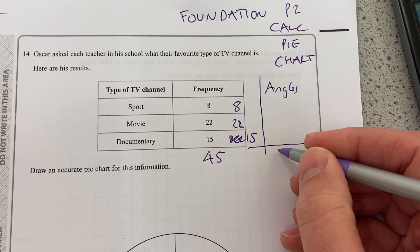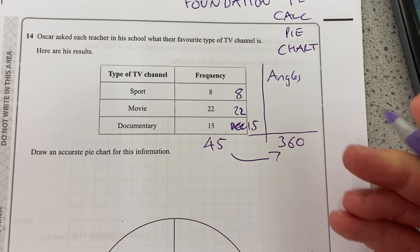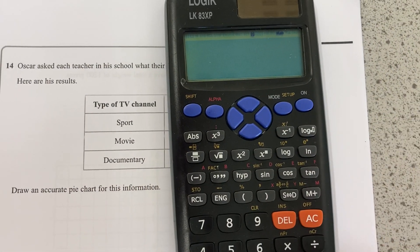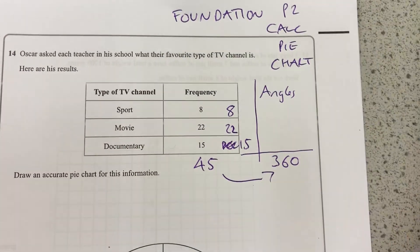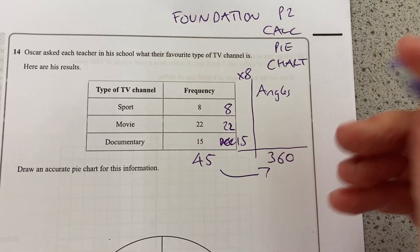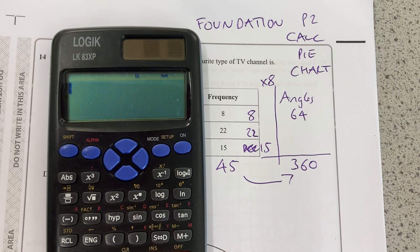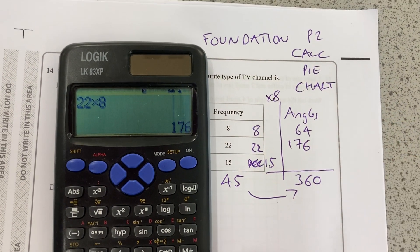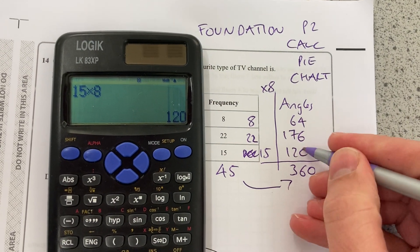Now, angles around a point or in a circle add up to 360, so I need to go from 45 to 360. I do know that is 8, but let's just confirm. 360 divided by 45 is 8. So each of these, I'm going to multiply by 8. 8 by 8, I know it's 64. That's a calculator paper, so 22 times 8 is 176, and 15 times 8 is 120.